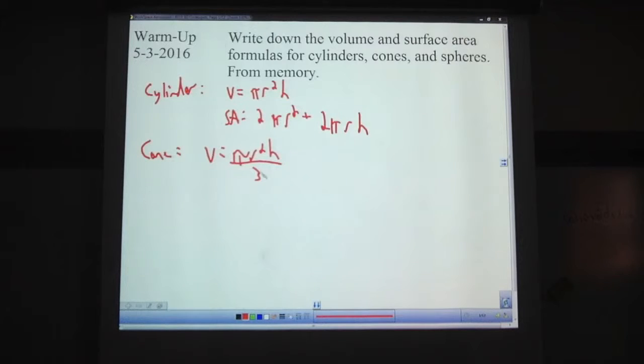Surface area, pi r squared, pi times radius squared, plus pi times radius times the slant height. You have two different heights for a cone, the regular height from the bottom to the top, and the slant height going along the diagonal from the bottom to the top.